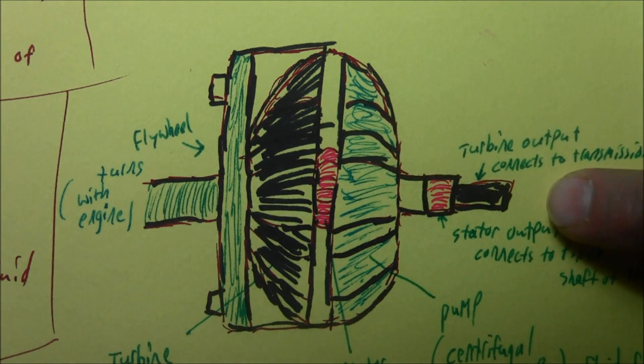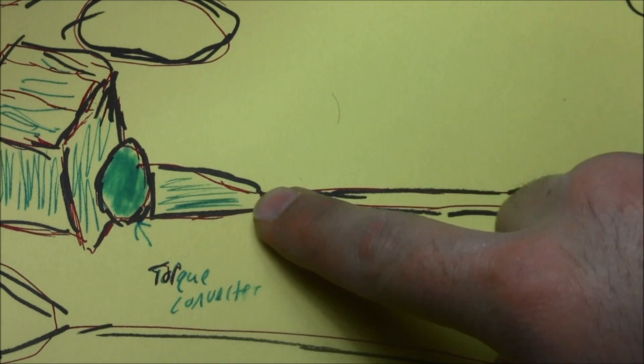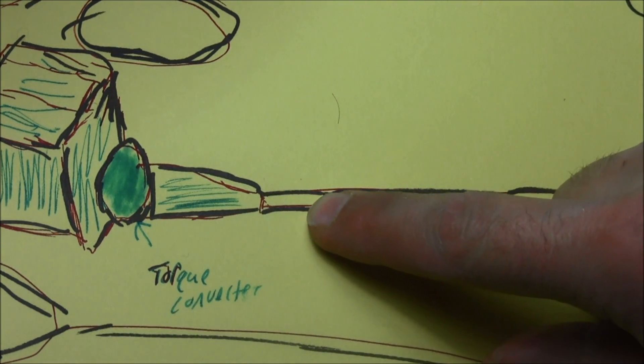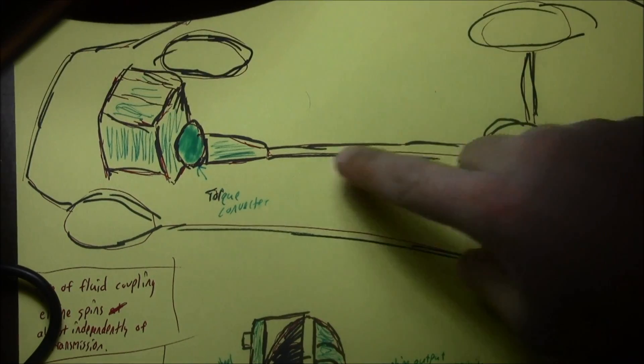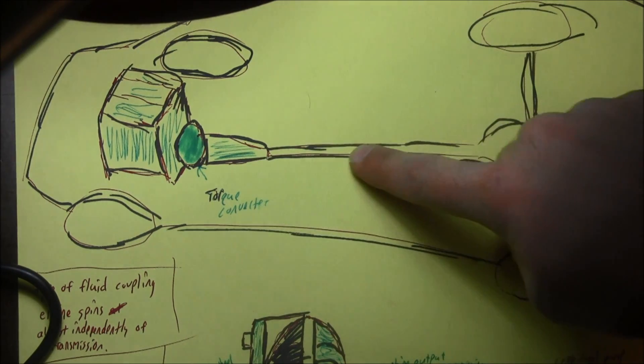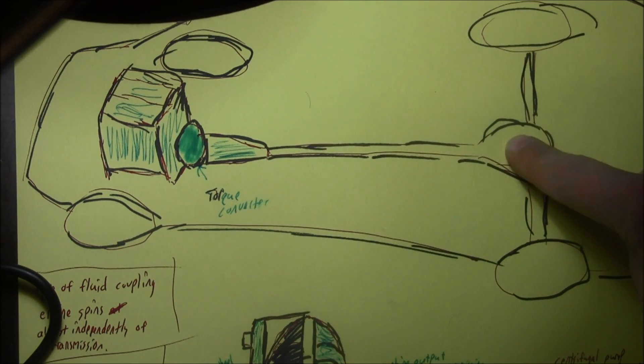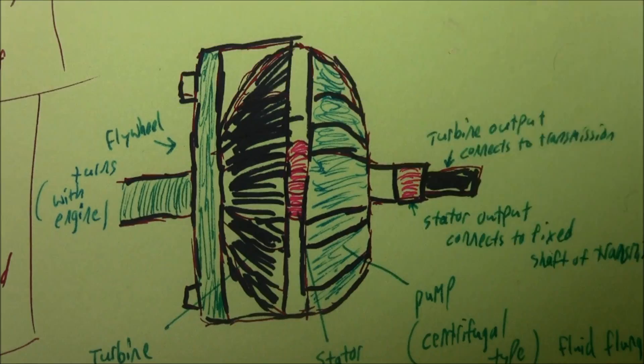The turbine connects to the input shaft of your transmission, which then connects to your drive shaft that goes underneath your car. From your torque converter, transmission, and drive shaft, it goes to your differential, then to your suspension parts and into your tires.